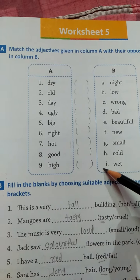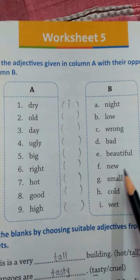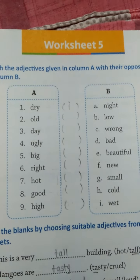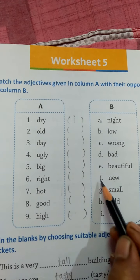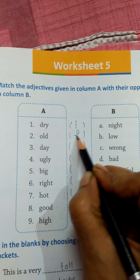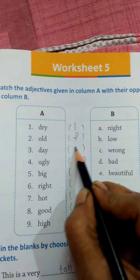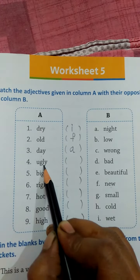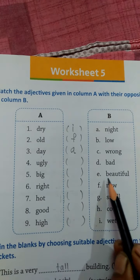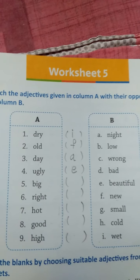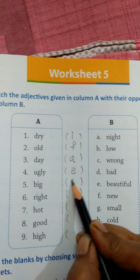Wet means gila — so dry's opposite is wet. Then old — old means purana — and new means naya, so old matches with new — write F. Then day's opposite is night — write A. Ugly means the one who doesn't look good, and beautiful means very pretty — write E. Big means bada, small means chota — so big matches with small.